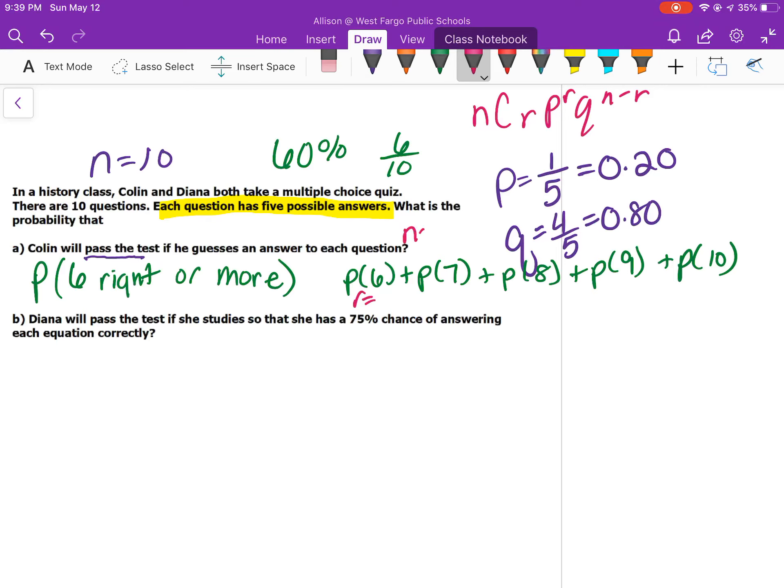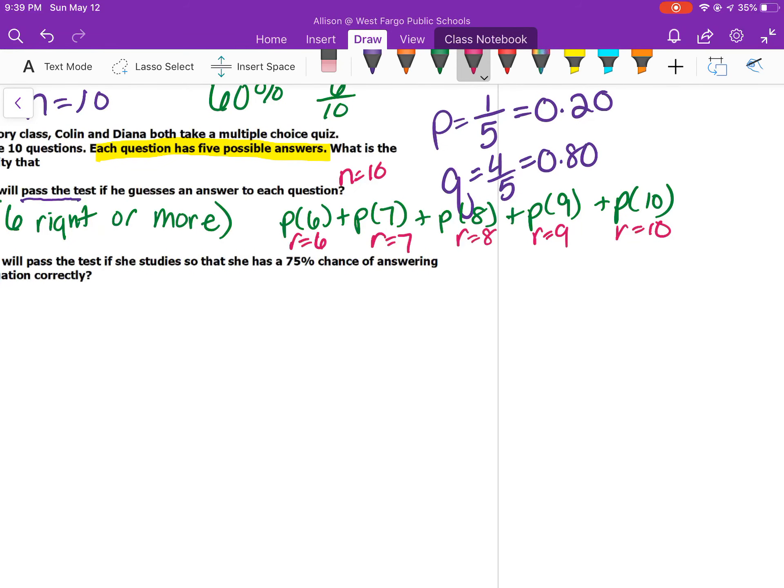In the first one, n would be 10 in all of them, but in the first P of 6, r would be 6. Here r would be 7, here r would be 8, r would be 9, and r would be 10. I found all of those decimals and the total, and I got 0.0063, or approximately 0.6% chance. So he has a very low percent chance that if he guesses, he will get these right.